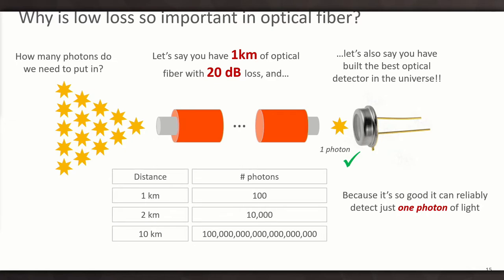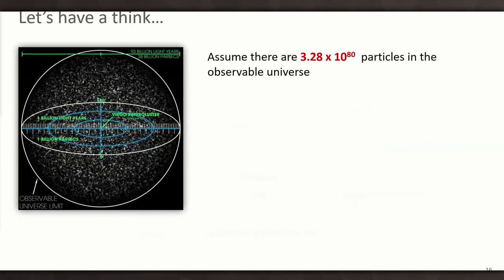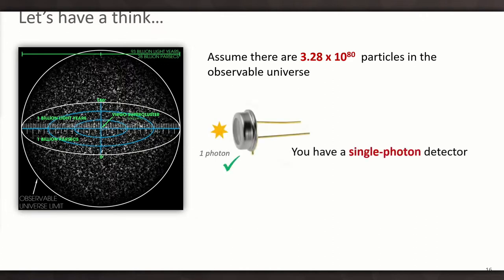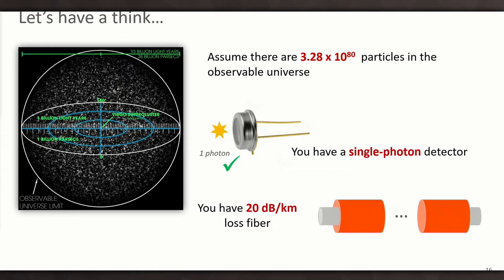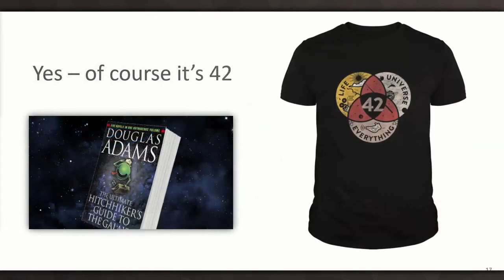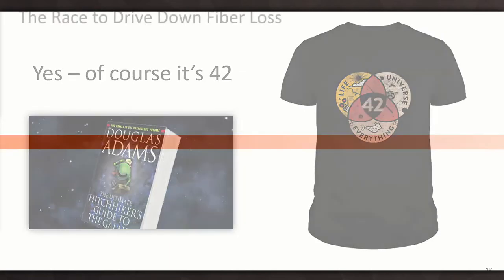Because the fiber is absorbing so many photons as they pass along it. So if you assume there are 3.28 times 10 to the 80 particles in the observable universe, and you've got your single photon detector with 20 dB per kilometer loss fiber, how far can you go? Well, of course, it's 42 kilometers. It's like the answer to life, the universe and everything. That's with 20 dB per kilometer loss fiber.